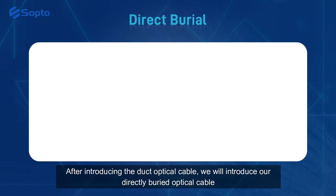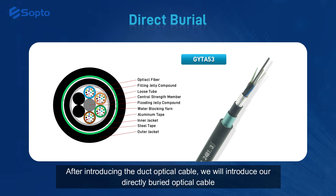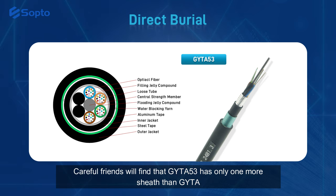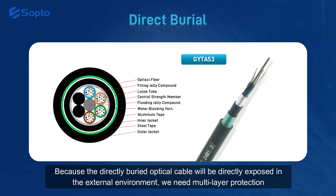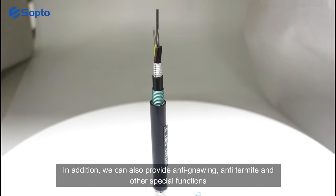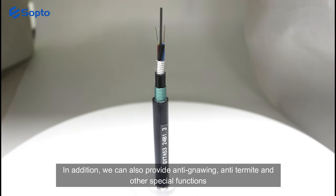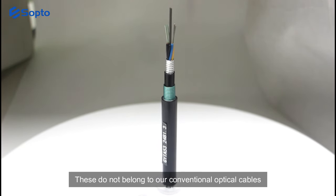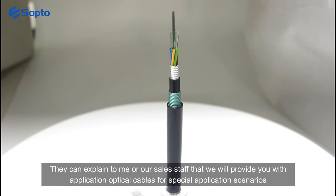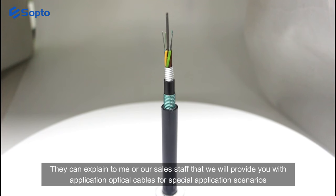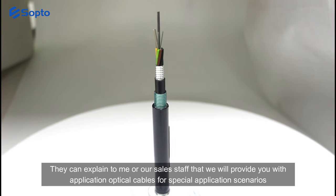After introducing the duct optical cable, we will introduce our directly buried optical cable. GYTA-53 has only one more sheath than GYTA. Because the directly buried optical cable will be directly exposed in the external environment, we need multi-layer protection. In addition, we can also provide anti-gnawing, anti-termite, and other special functions. When customers have this demand, they can explain to our sales staff and we will provide optical cables for special application scenarios.